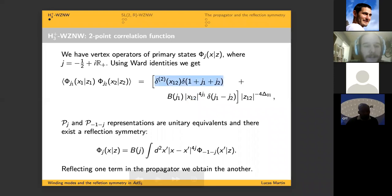The representations P_j and P_{-1-j} are unitary equivalence and there exists a reflection symmetry between both of them. We can find a state phi_j from the state -1-j, and if we reflect one field in the propagator we turn one term, the contact term, into the bulk term and vice versa.